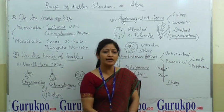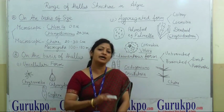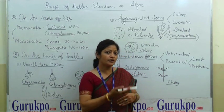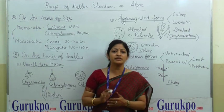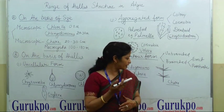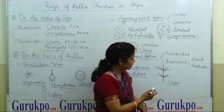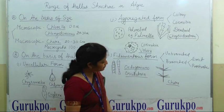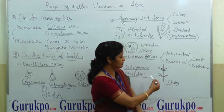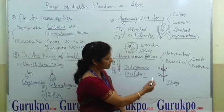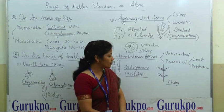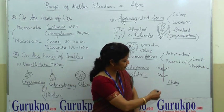If we talk about branched filaments, branching may be of two types: it may be prostrate or erect, or sometimes it may occur in both forms — prostrate and erect. An example of branched algae is Chara. In Chara, the filaments are divided into nodes and internodes, and from each node, different filaments arise.